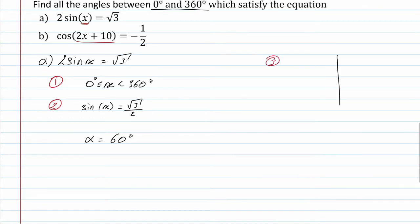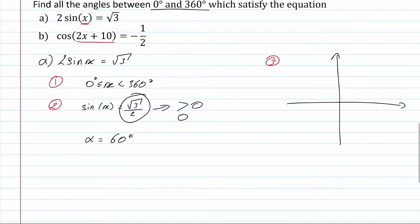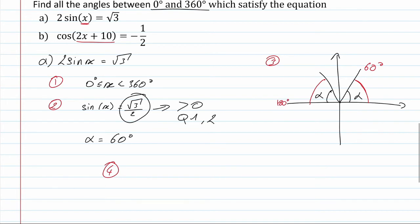For the third step we need to place alpha on the right quadrant. Since root 3 over 2 is positive, and sine is positive in quadrant one and quadrant two, we place alpha in both quadrants. For the fourth step, finding angles with alpha of 60 degrees between 0 and 360 degrees, we get 60 degrees and 180 minus 60 equals 120 degrees. So x equals 60 degrees and 120 degrees. We don't need the last step as we already have x.